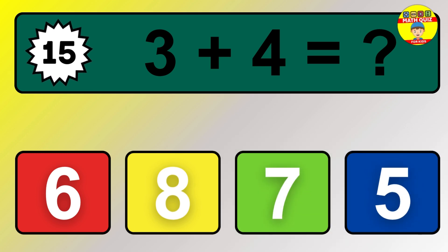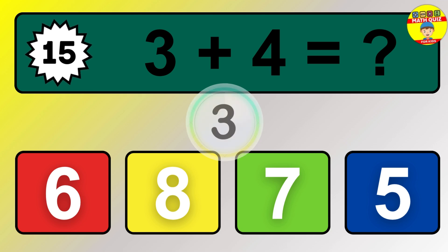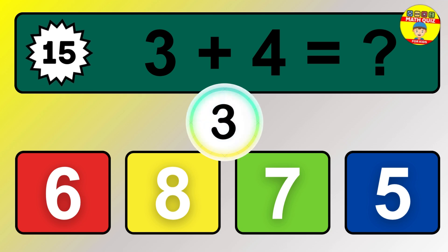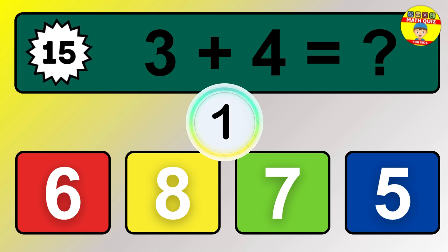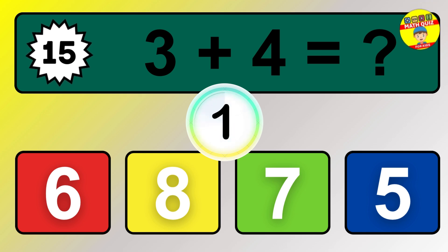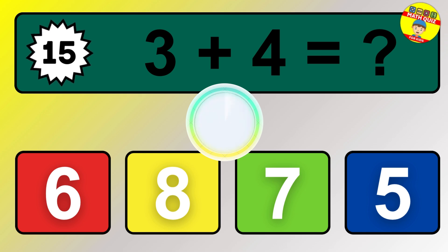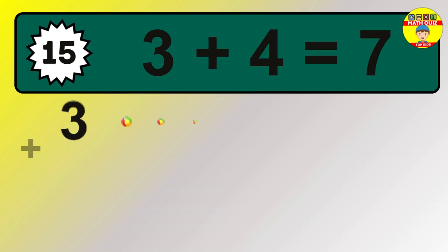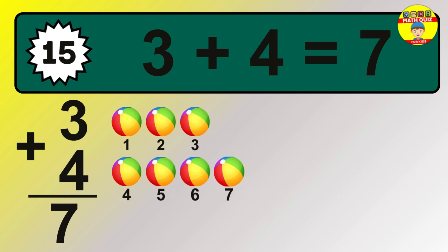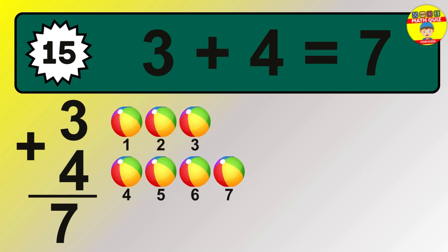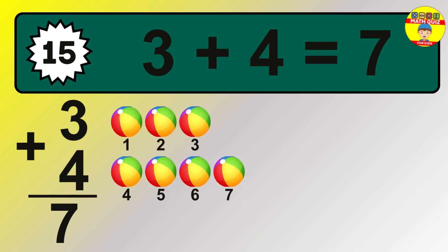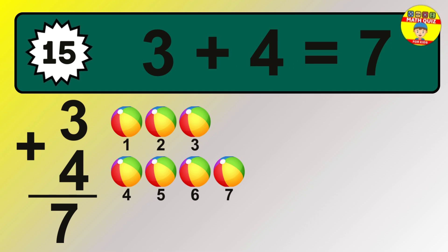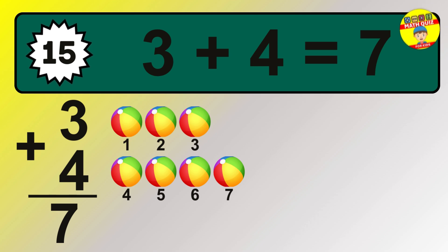Question 15. 3 plus 4 equals what? So the answer is 3 plus 4 is 7. Let's count it. 1, 2, 3, 4, 5, 6, 7.